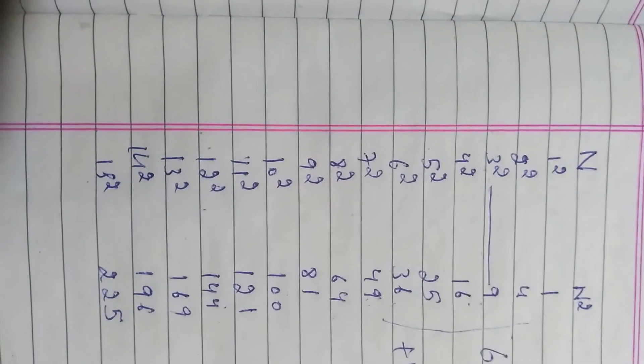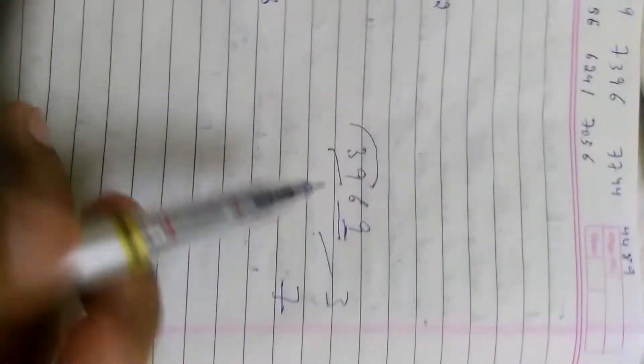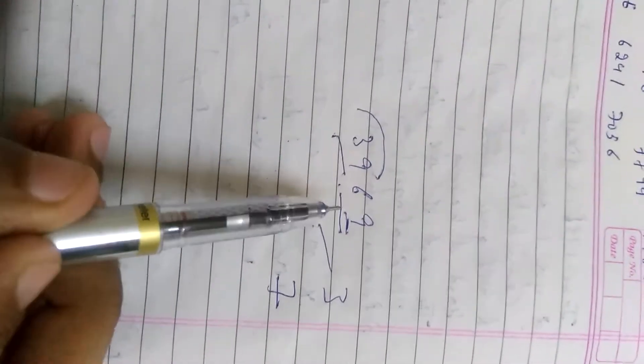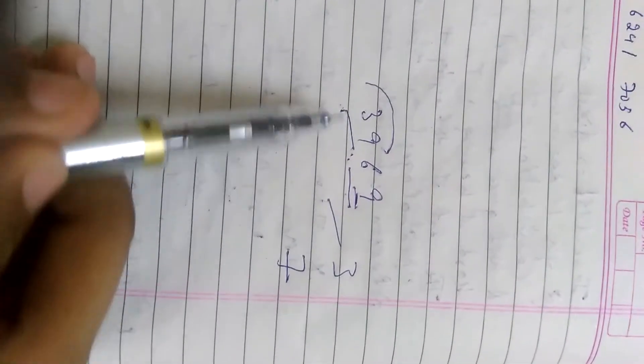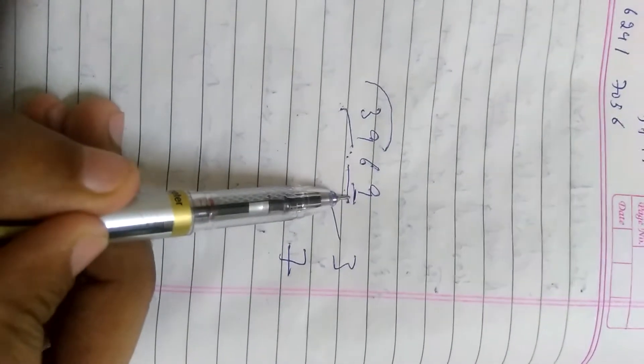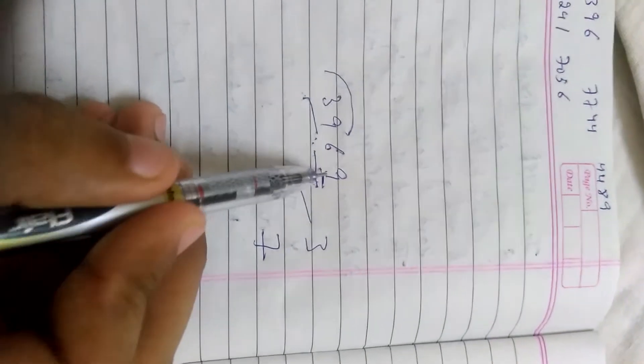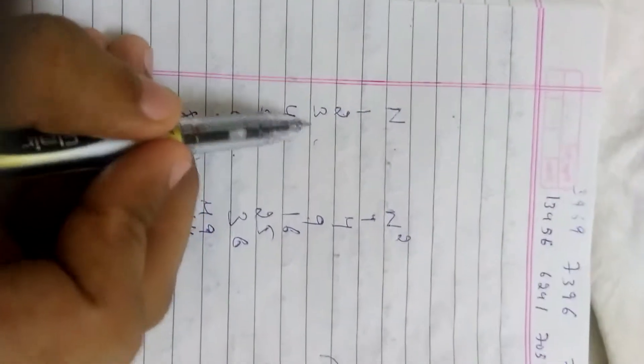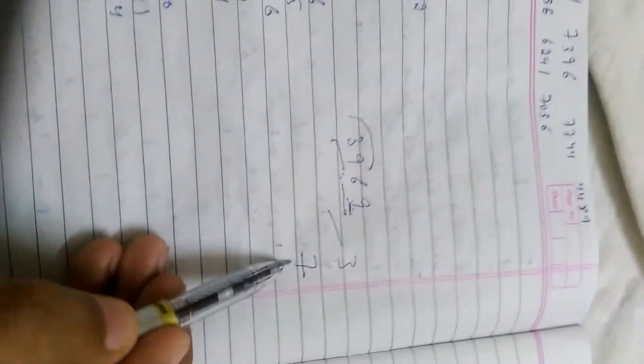First of all, consider a number, suppose 3969. We divide the number into two parts, 39 and 69, as you can see. First look at the last digit 9. The 9 digit occurs in the 3 square and 7 square, so I write 3 and 7.